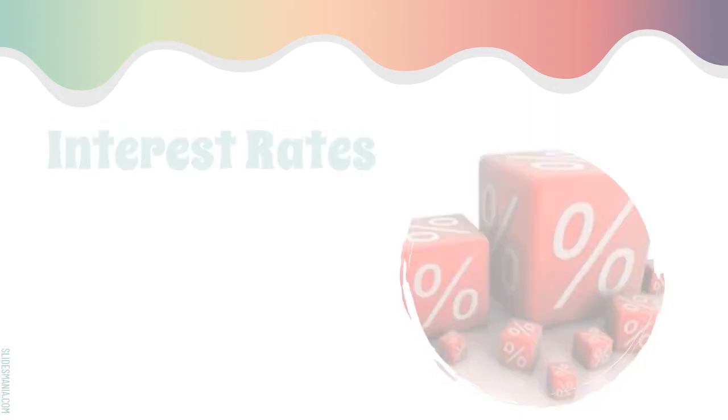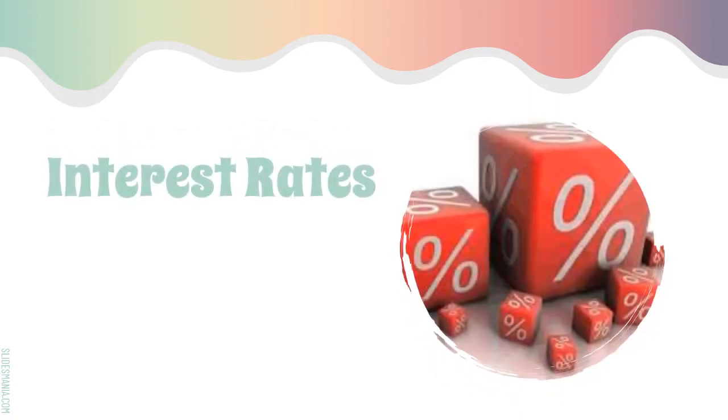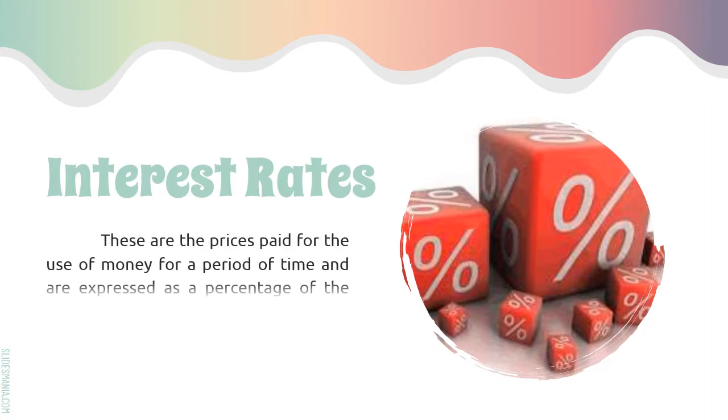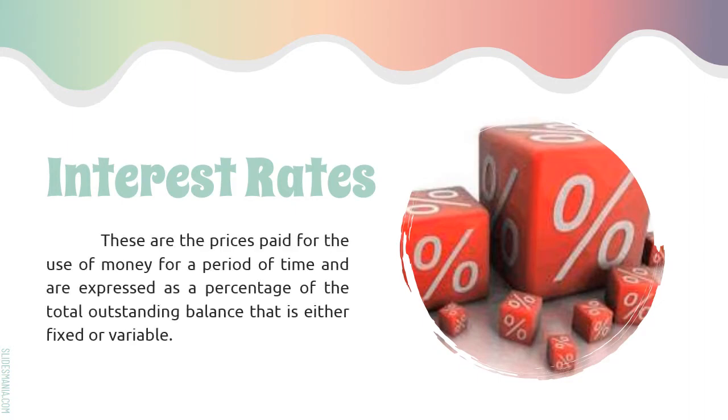Companies raise capital in two main forms: debt and equity. In a free economy, capital like other items is allocated through a market system where funds are transferred and prices are established. Interest rates are prices — the price paid for the use of money for a period of time — and they are expressed as a percentage of the total outstanding balance that is either fixed or variable.